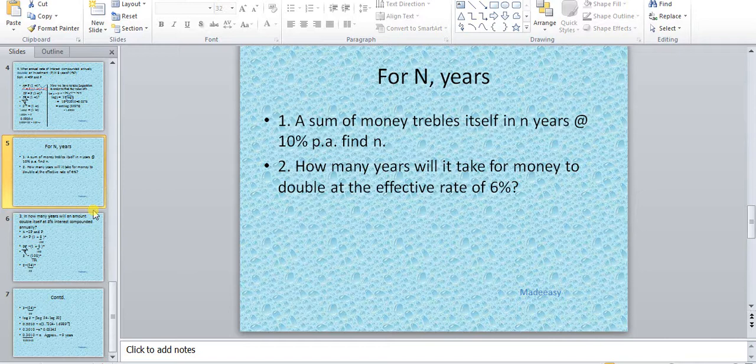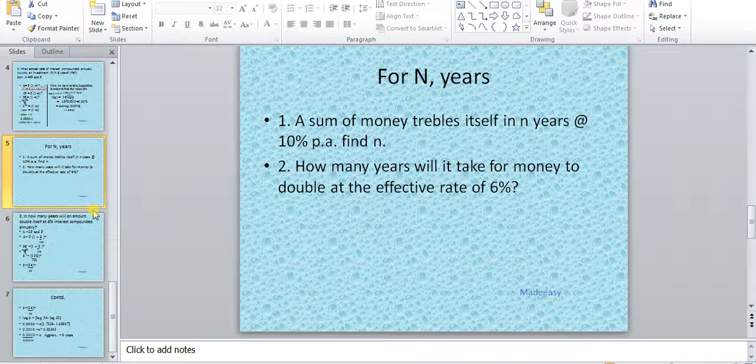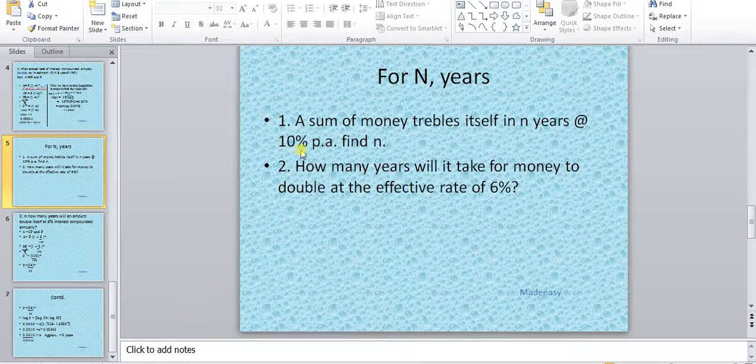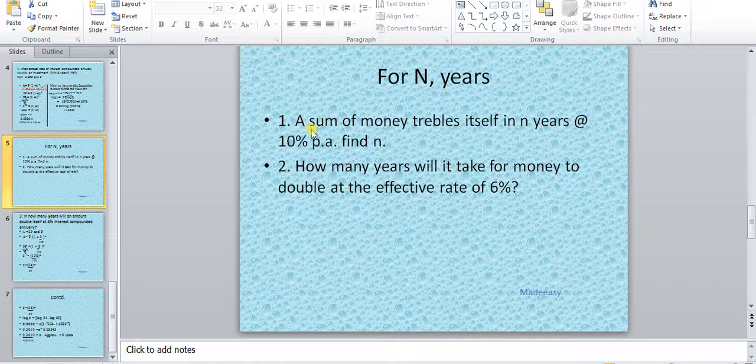Now we have to find out n years. The problem is the same, but here we have to find n years, not r percent. R percent is given. So now another type: a sum of money trebles itself.